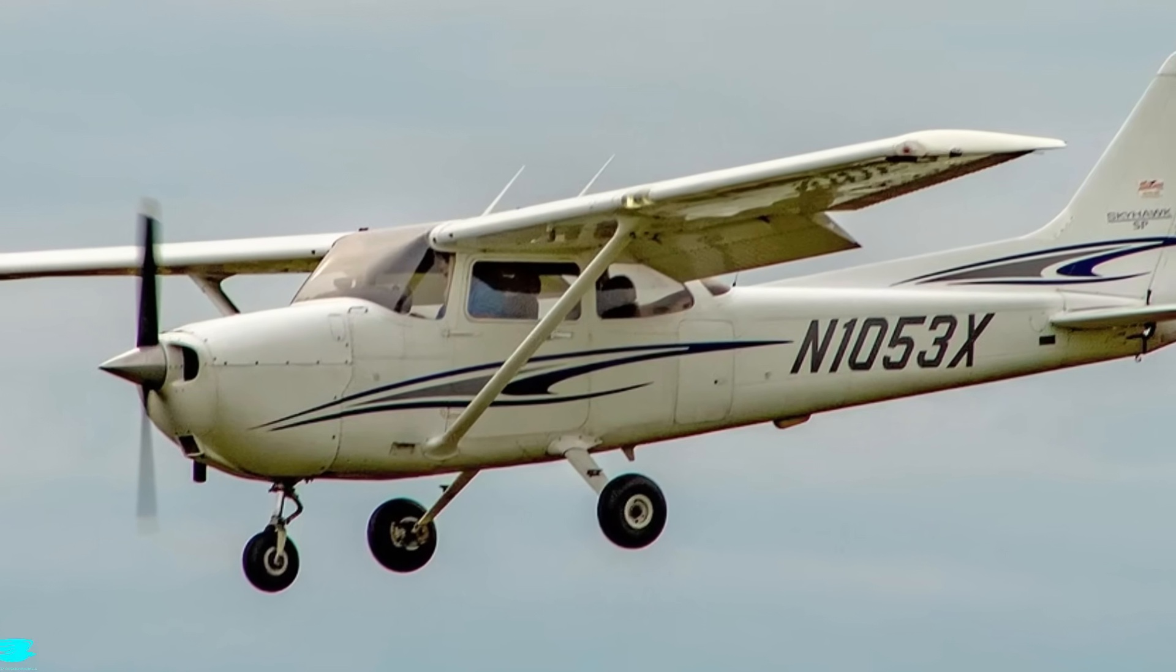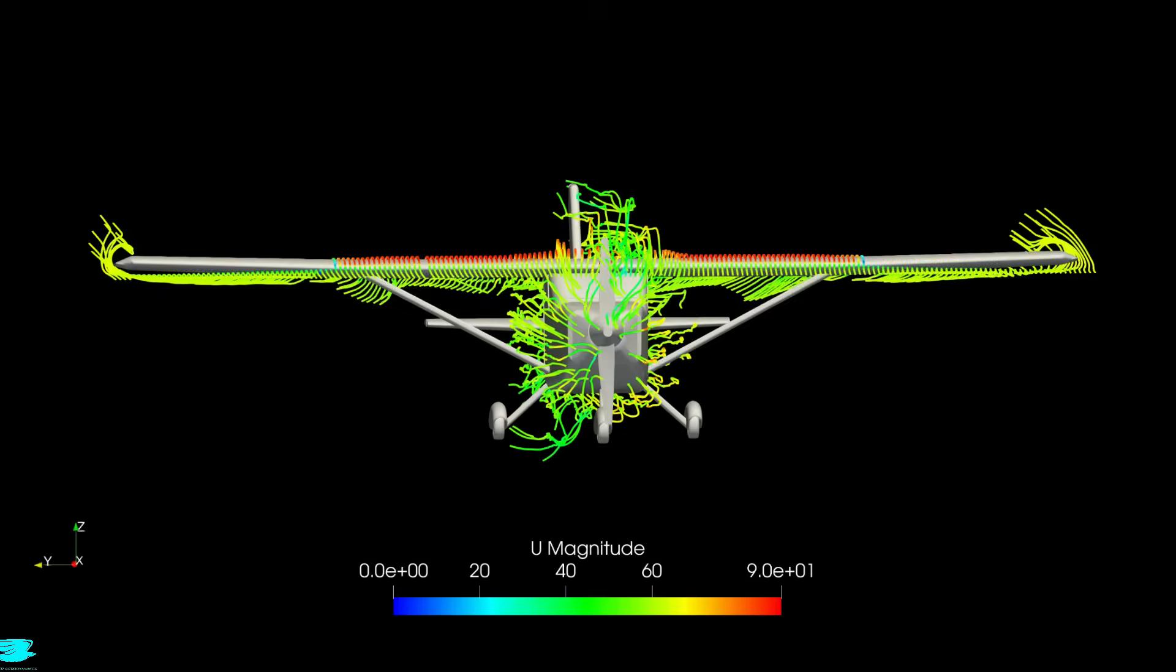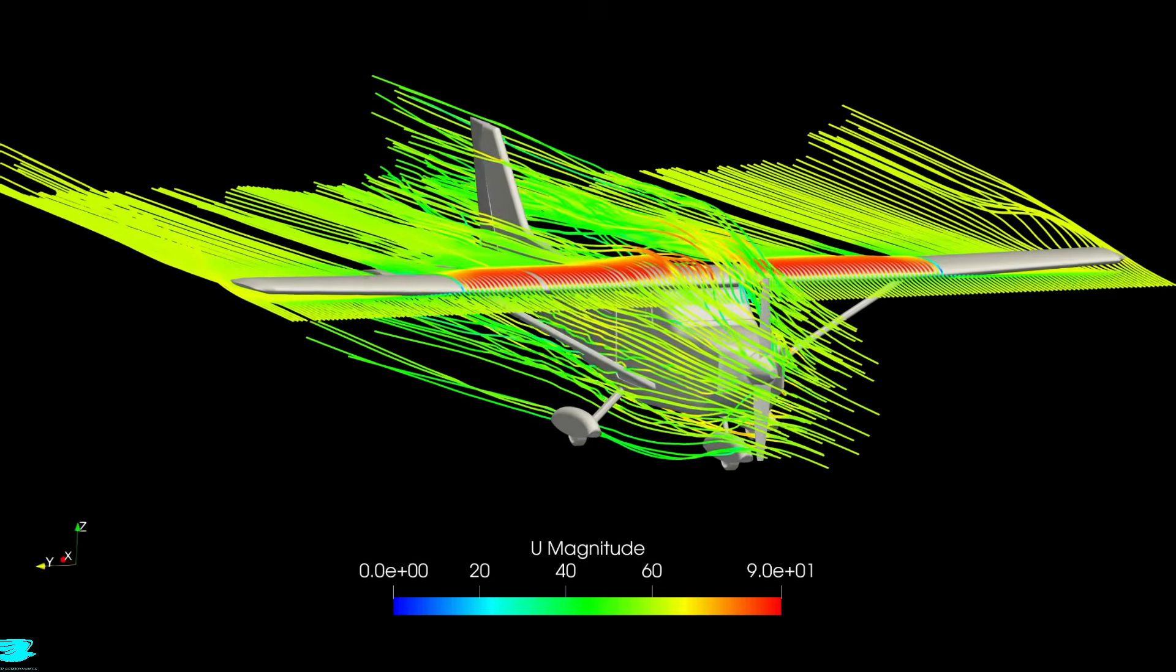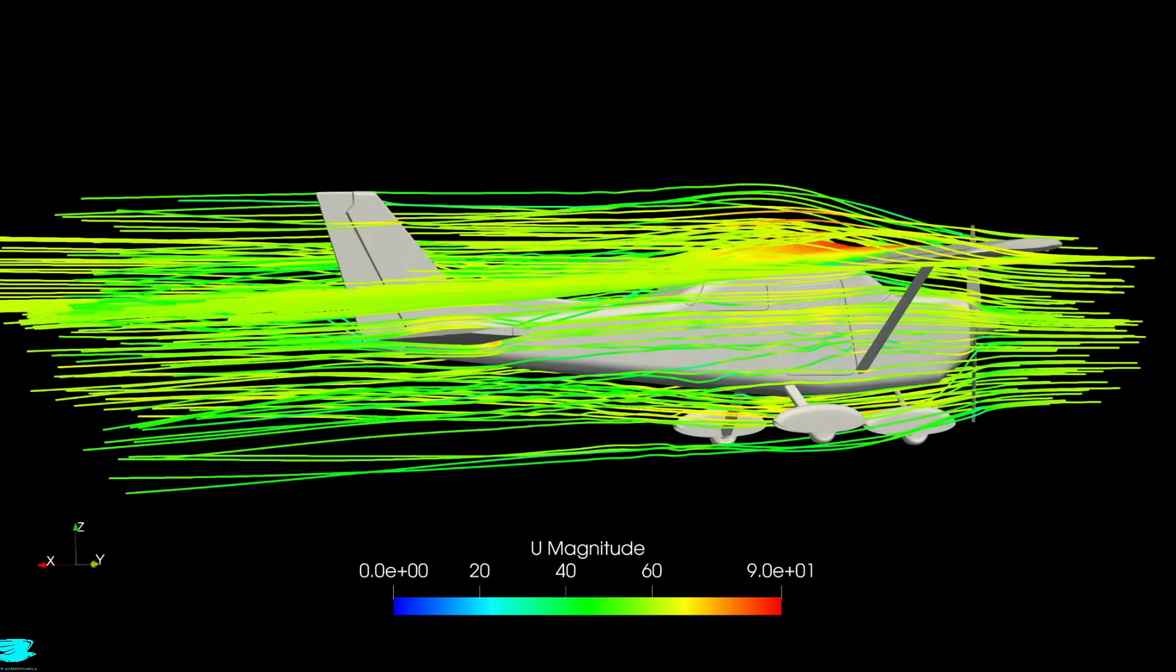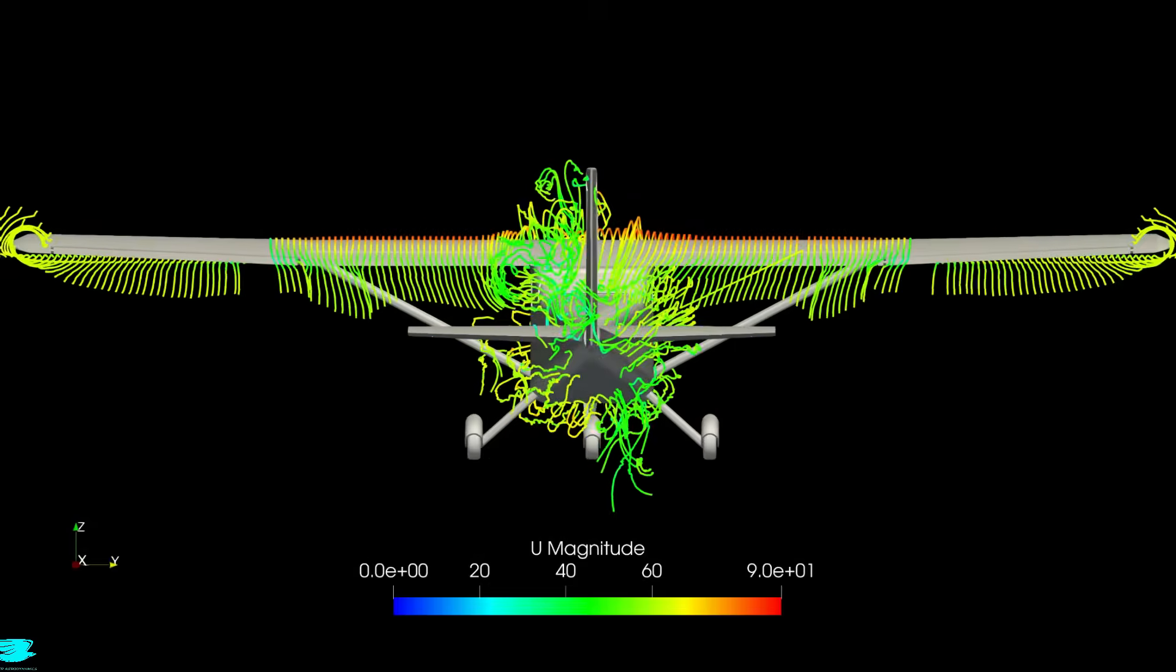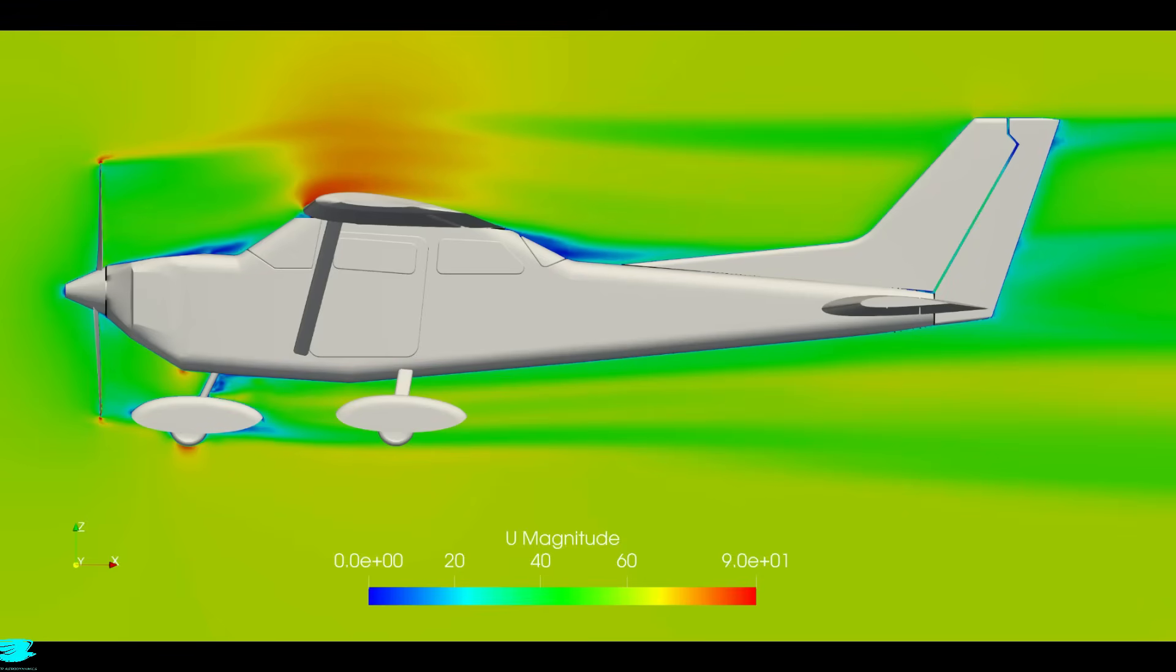The Cessna 172 might look pretty janky, but in this video, we'll cover why it's actually one of the best planes ever made. We'll be going through its bad parts, its good parts, and some of the ways Cessna improved the bad parts, and to help illustrate these parts, we did a simulation of it at cruise.